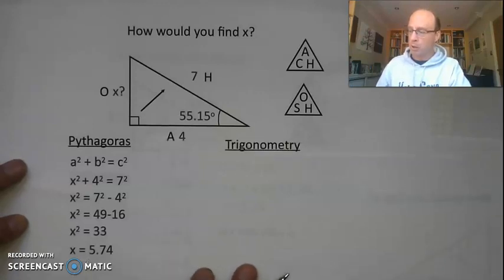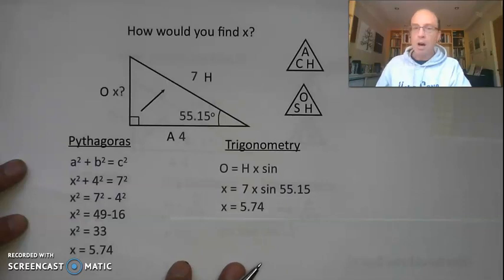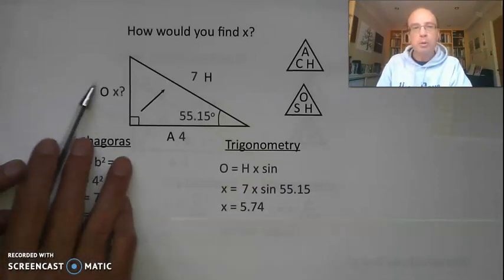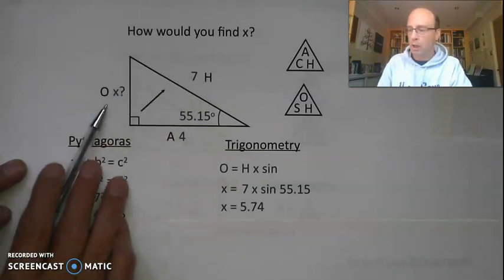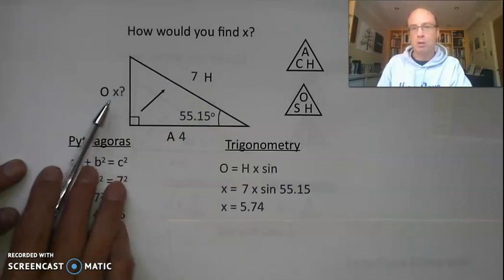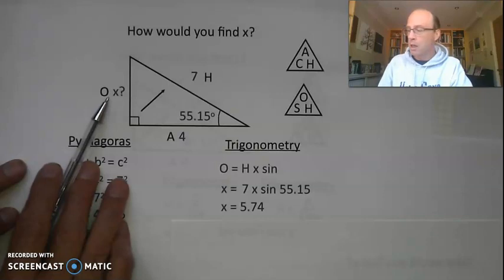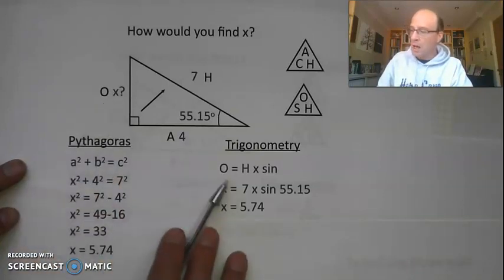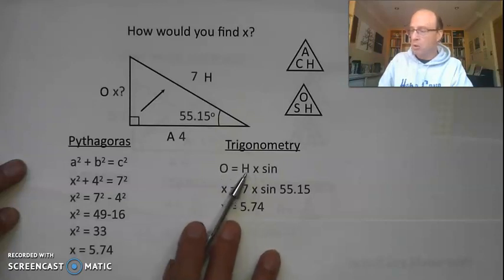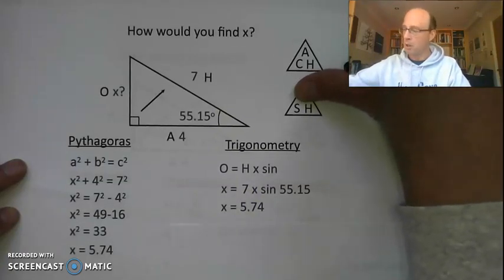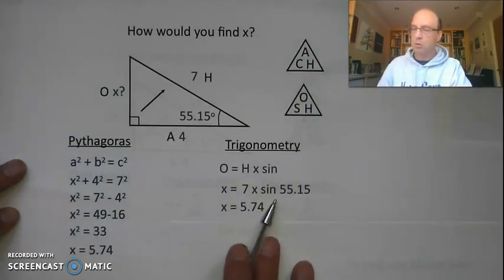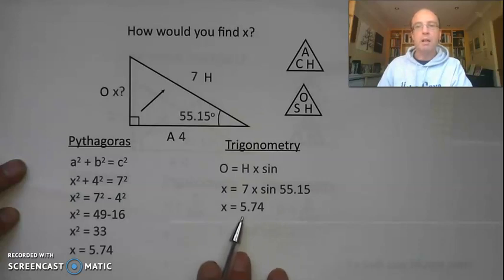Some of you might have gone for the trigonometry option. I've gone for sine — we're trying to find the opposite side, we know the hypotenuse. We need a ratio that contains the opposite, so sine equals opposite over hypotenuse. Rearranging: opposite equals hypotenuse times sine. So it's 7 times sine of 55.15, which gives a value of 5.74 — the same value.